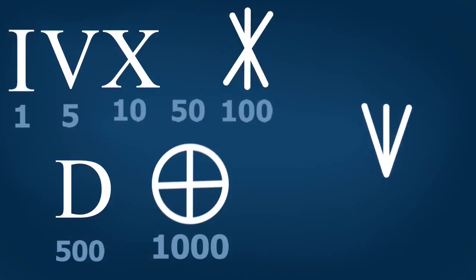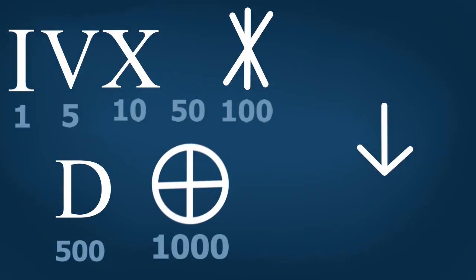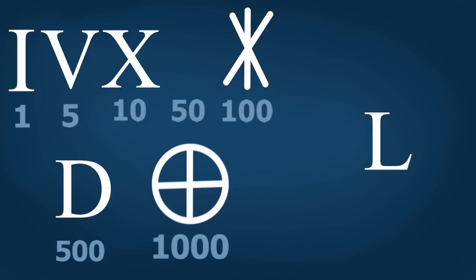Let's start with fifty. With some time, the number fifty started to look like an arrow pointing downward. Because it was easier to write, they made the number fifty become flat — it looked like an inverted T at that point. And with a little more time, it just started to look like an L. And that's why fifty became an L.